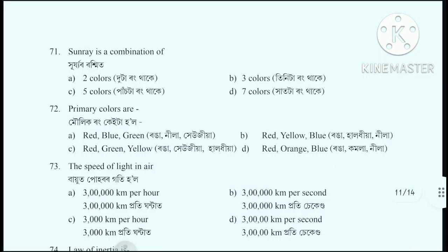Question number 71: Sun ray is a combination - sunlight, how many colors does it contain? The correct answer is option D: Seven colors.